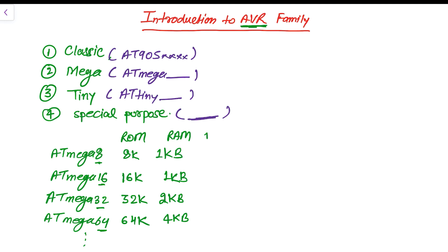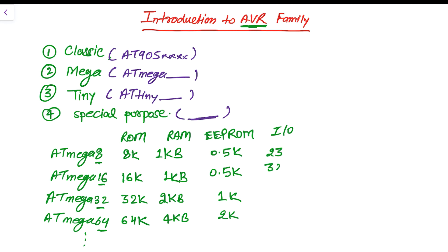The third type of memory is EEPROM. It is not as large as flash, but some EEPROM is available: 0.5KB for ATmega 8 and 16, 1KB for ATmega 32, and 2KB for ATmega 64. For I/O pins: ATmega 8 has 23 pins, ATmega 16 has 32 pins, ATmega 32 has 32 pins, and ATmega 64 has 54 pins.